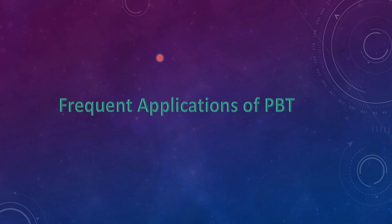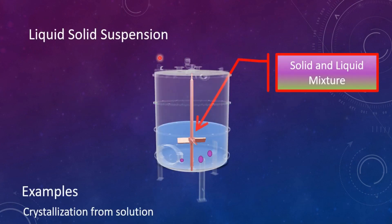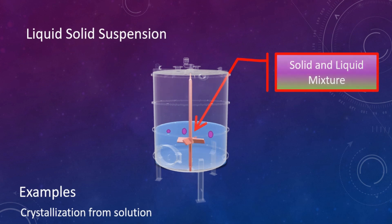Here are the frequent applications of PBT. The first one is liquid-solid suspension. The pitched blade turbine can be used to suspend solids in liquids — for example, crystallization from solution or precipitation of crystals from solution.